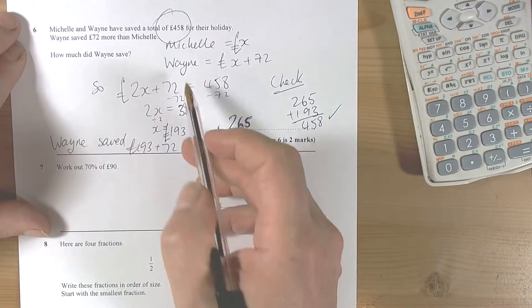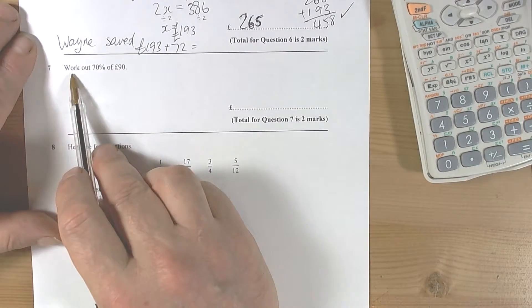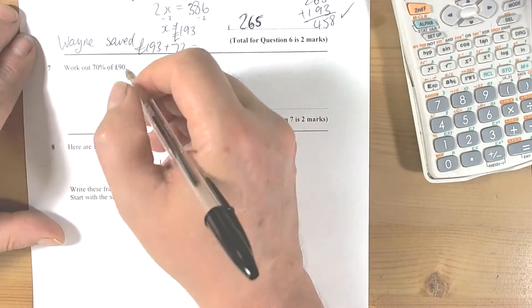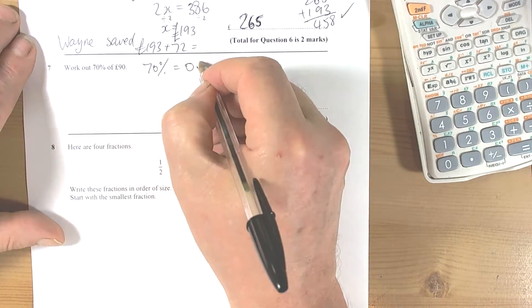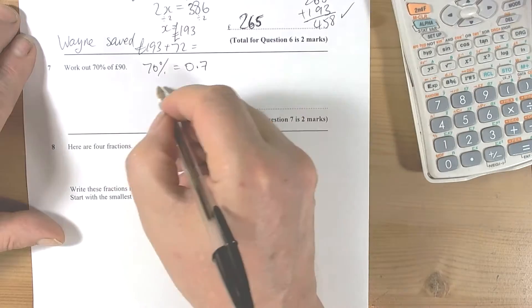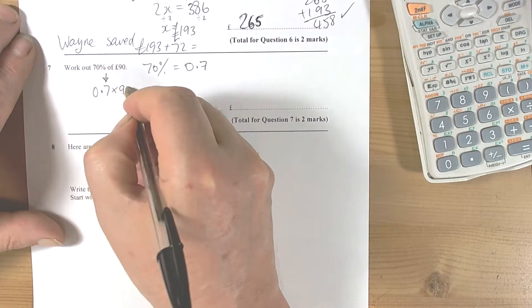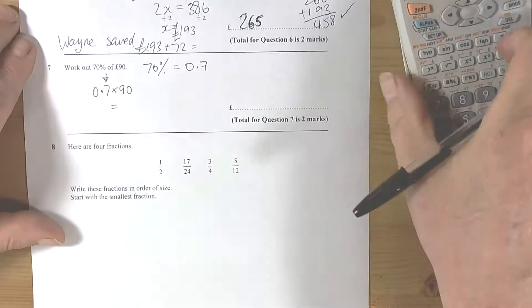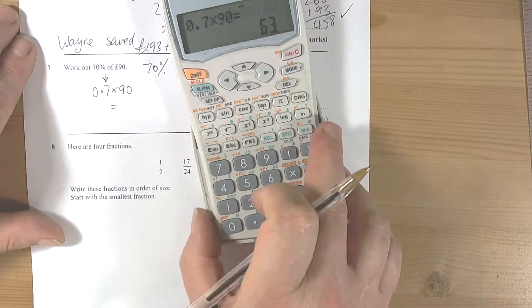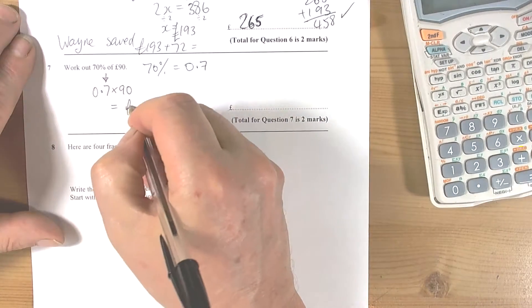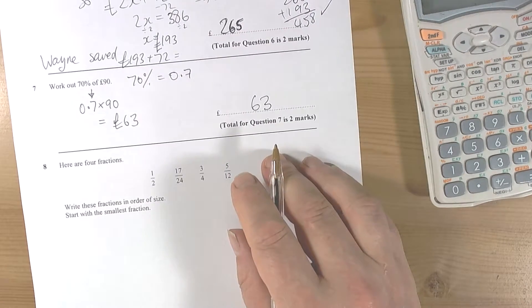Work out 70% of 90 pounds. Well, percentage multipliers help with these kind of questions. So 70 percent is the same as 0.7, so to do 70 percent of 90 is the same as doing 0.7 times 90, which on your calculator will give you 63. So 63 pounds.